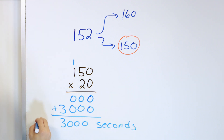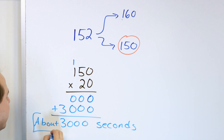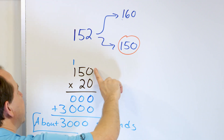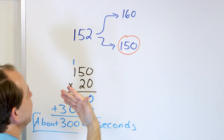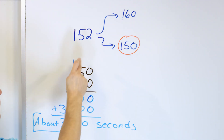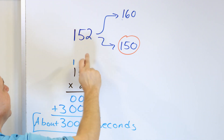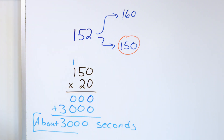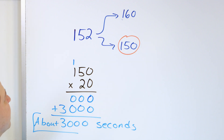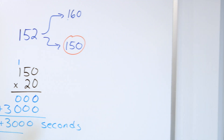And I'll put the word 'about.' Why do I have to use the word 'about'? Because I do not have exactly 150 commercials — that was rounding to get an estimate. Really, I have 152. If I wanted to know the exact amount, I would take 152 and multiply by 20. But this is a really good estimate of how many seconds of commercials, and that's why we're doing the rounding in that problem.